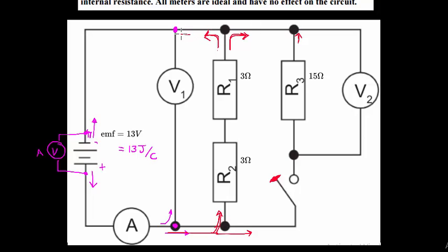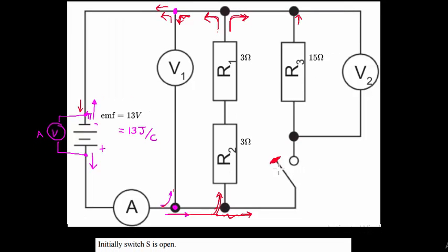Once again at a junction, the current can split in different directions, but paths without a closed circuit carry no current. So when the switch is open, my current never actually splits — meaning these two resistors are effectively in series. When I close the switch, I now have the option of splitting, giving two parallel branches.